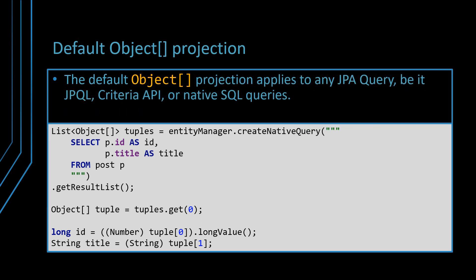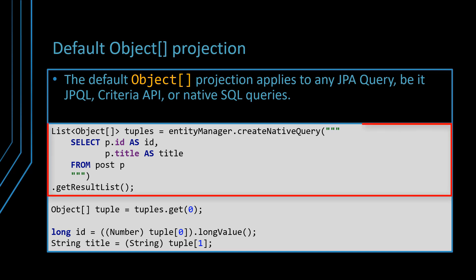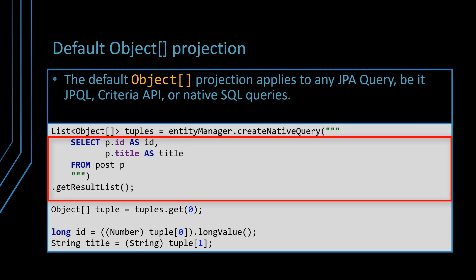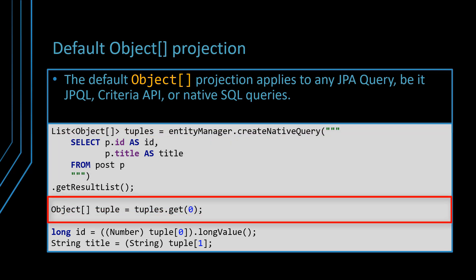The default JPA projection applies to any JPA query type, be it JPQL, Criteria API, or Native SQL. So when executing a multi-column projection query without specifying an explicit ResultSet mapping, the JPA provider maps each row in the JDBC ResultSet to a Java object array.